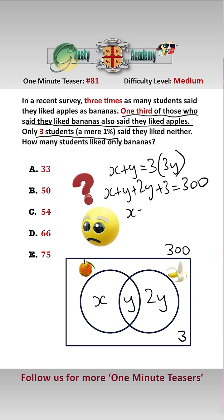So solving this, we get x equals 8y, and putting that into the second equation, we get 11y equals 297, i.e., y equals 27.